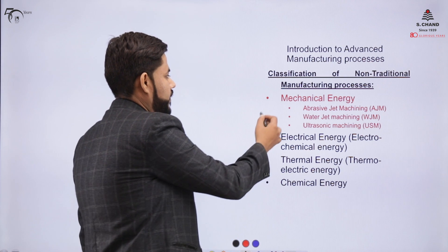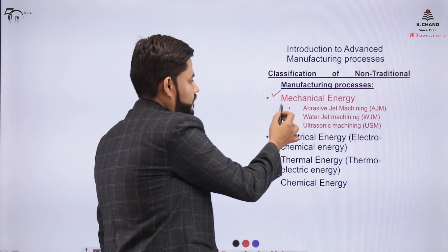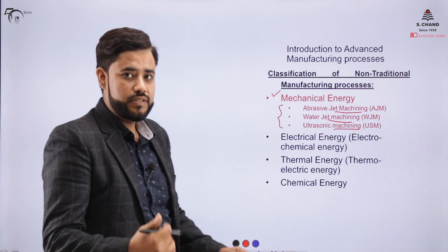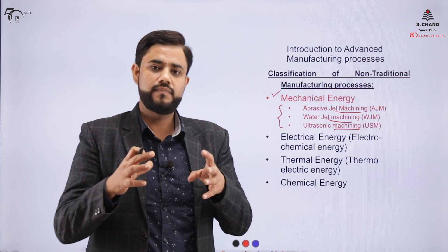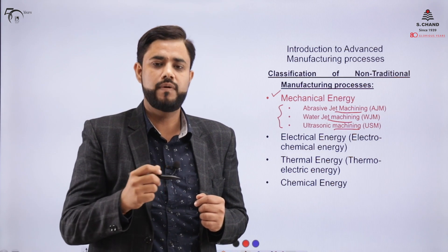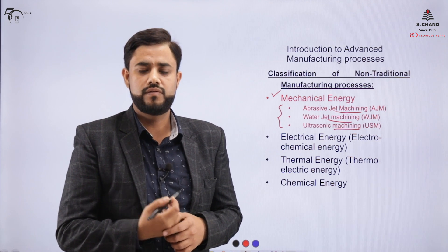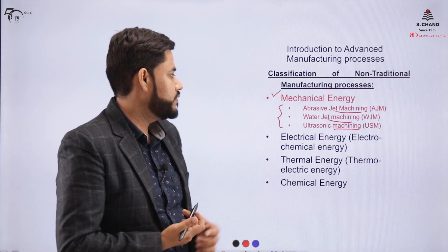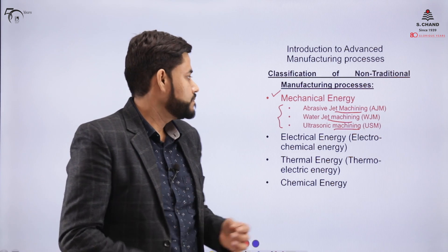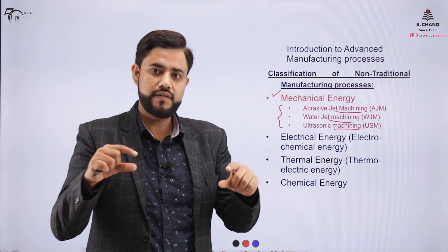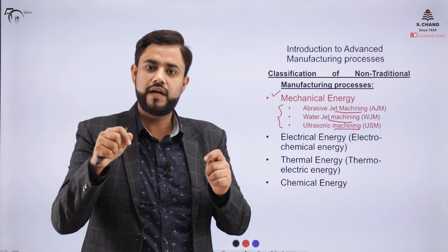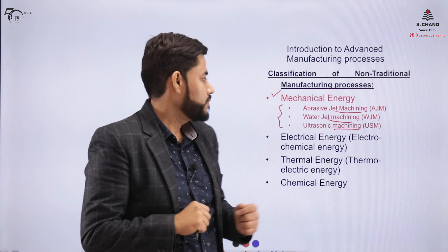Under mechanical energy we have abrasive jet machining, water jet machining, and ultrasonic machining. In abrasive jet machining, a slurry of abrasives is placed in the gap and cuts material to create contours on the surface. Abrasives mixed with water can also cut materials such as mild steel. In ultrasonic machining, a horn is placed on the surface creating an impact that produces the desired shape on the workpiece.